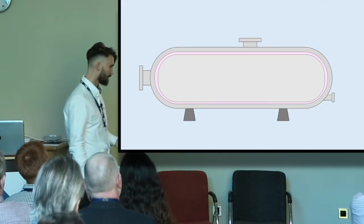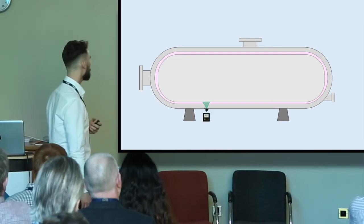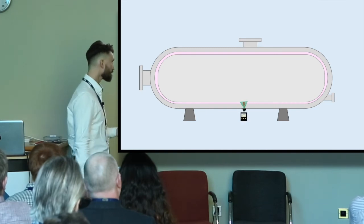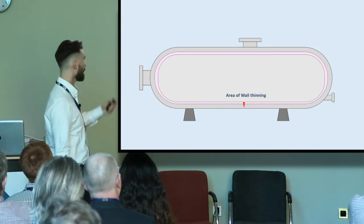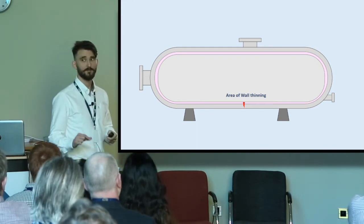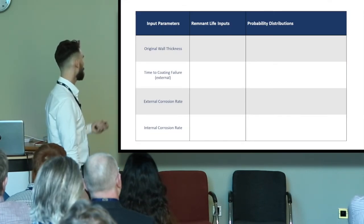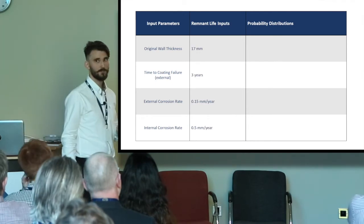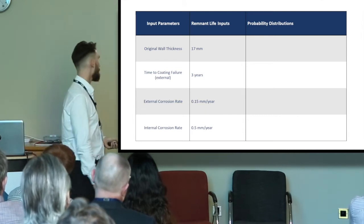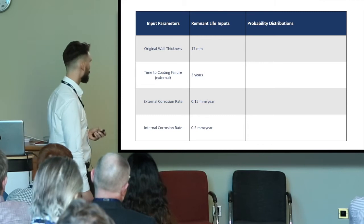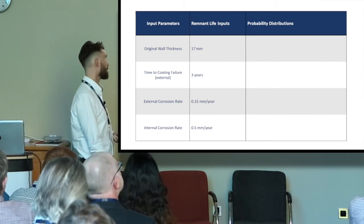So let's see it in motion. We've got here a carbon steel vessel, externally coated, internally lined. We're going to do some wall thickness checks on it. At this point here we find that we've had some wall thinning, and we want to know how long it's going to take for that wall to get to our failure criteria. Typical remnant life inputs: we measured it at 17 millimeters, we're saying the external coating will last for an extra three years.